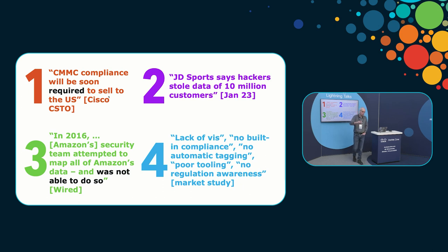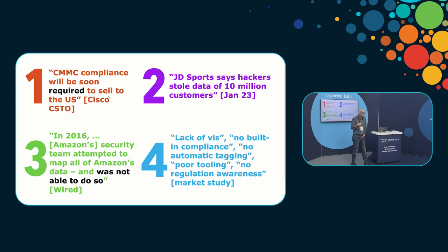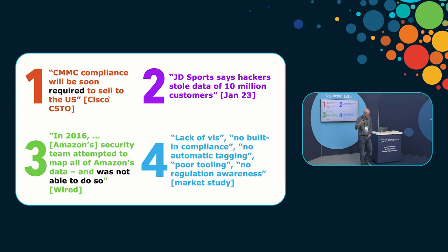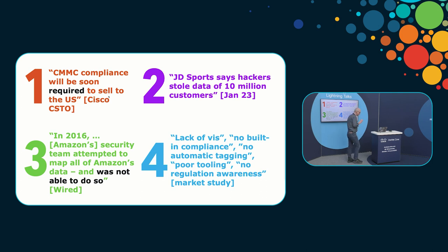And here we are doing application security, saying you're going to run an application that operates on data, but we don't even know what that data is, what is represented by the data, and what value is captured in it. This is a quote from last week: JD Sports lost data for 10 million customers. We're working with a partner, security.ai — they can tell you how much that data is worth. If this is German PII, US PII, or Californian PII, it's going to cost a ton of money to recover. Understanding what that data is and how it's managed inside an application is critically important.